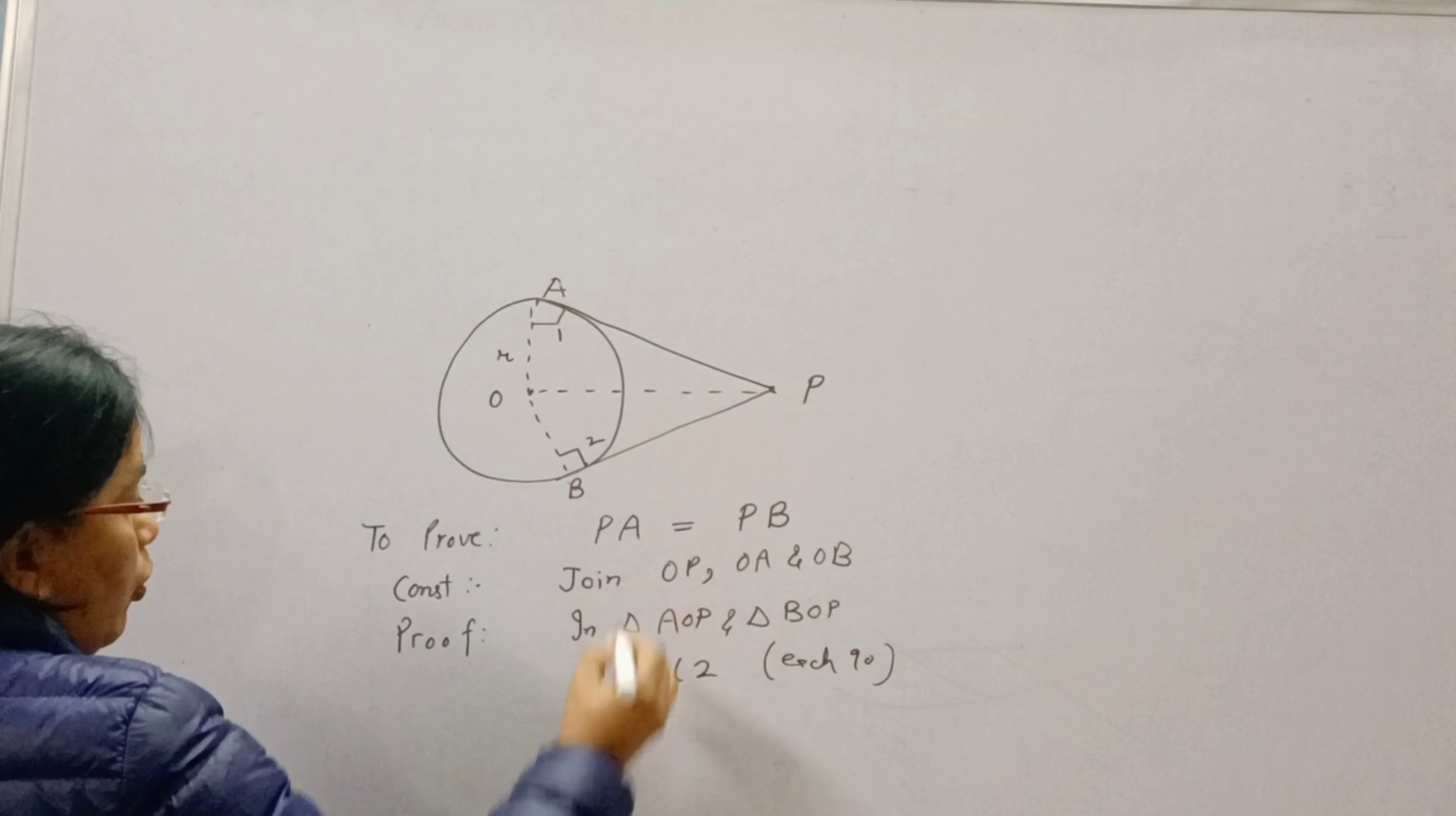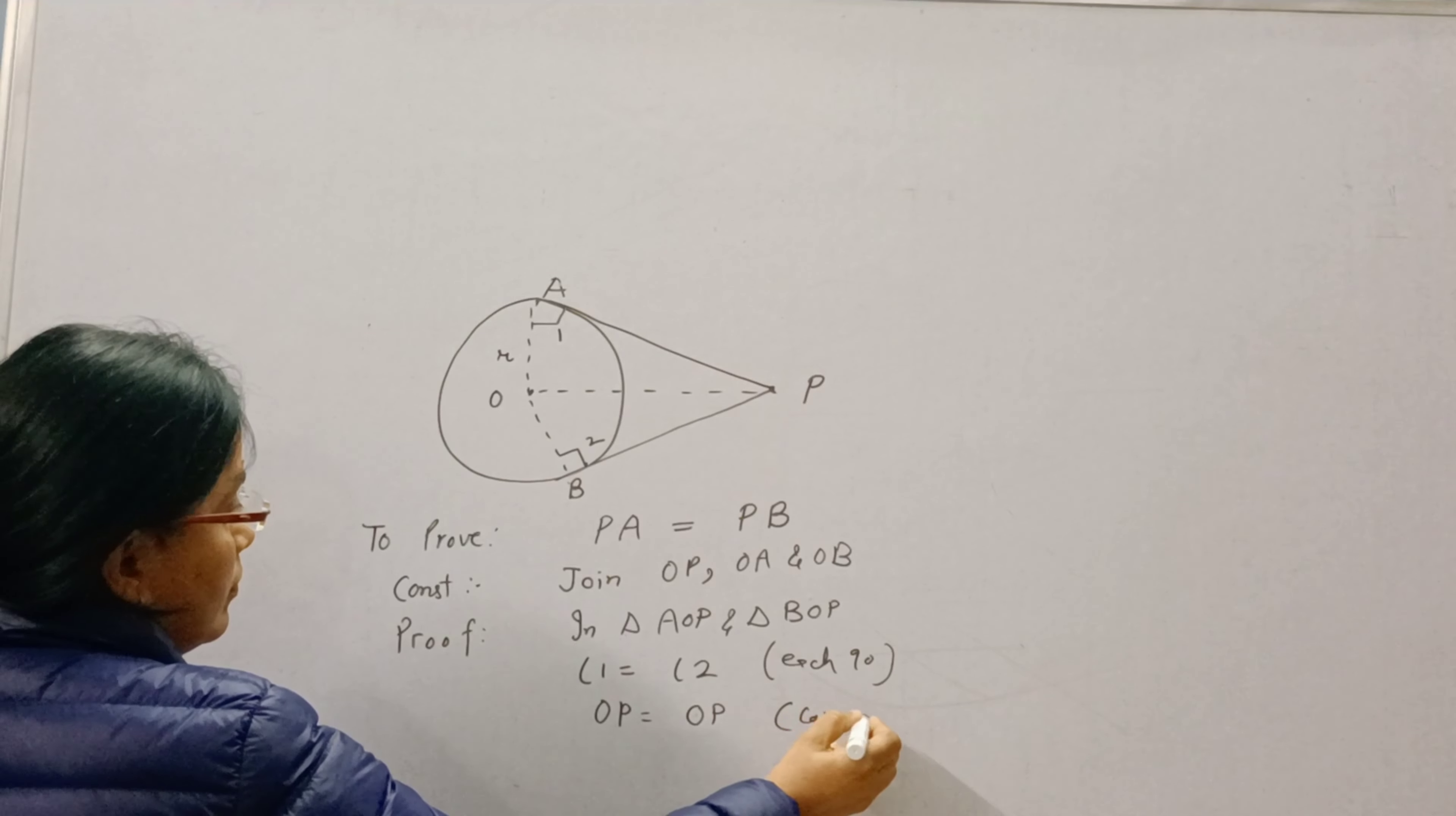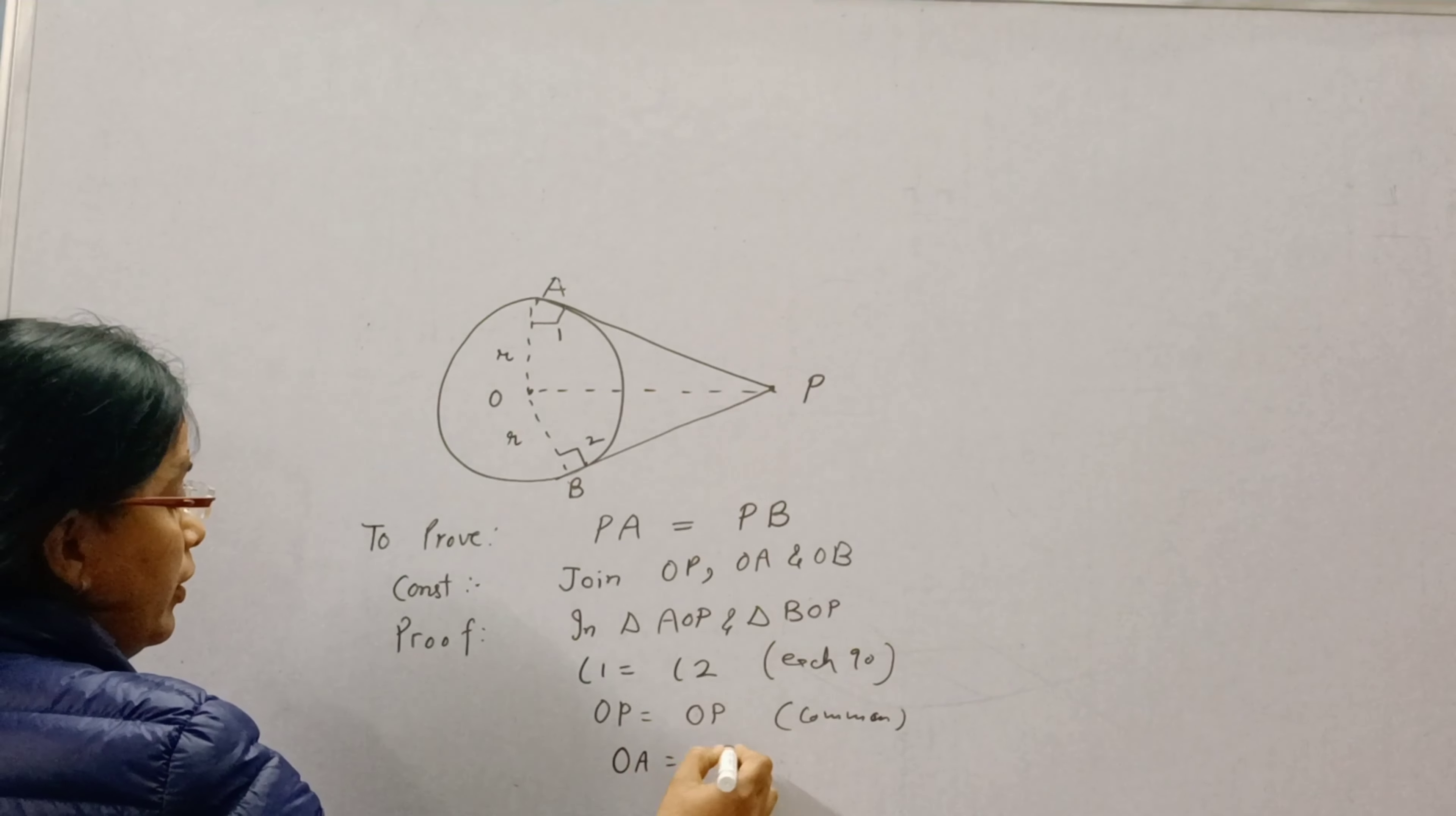Then, OP is common. And OA is the radius and OB is also the radius. So, we can write OA equal to OB, radii of the same circle.